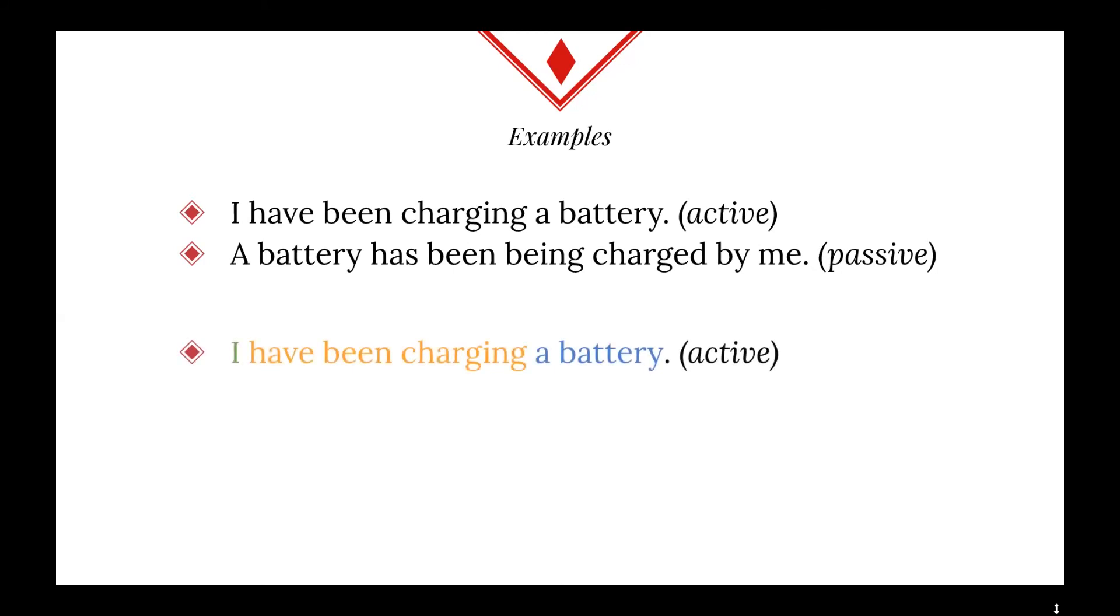I is the subject, have been charging is the verb, and battery is the object, in the active voice. In the passive voice, battery has become the subject, has been being charged is the verb, and me becomes the object.